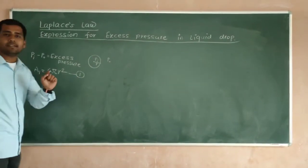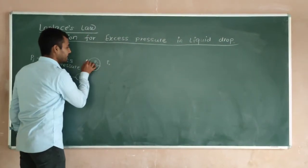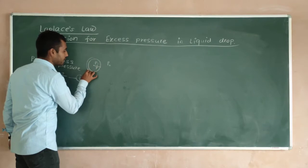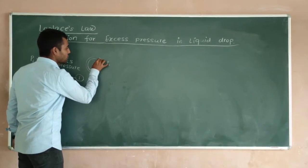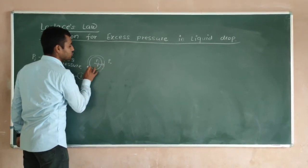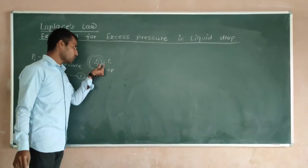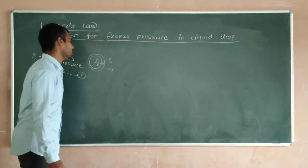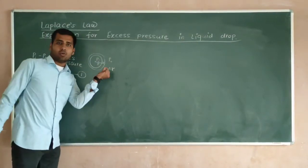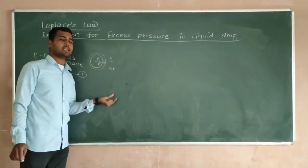Now let's consider the change in area. Here we have a layer of area. We consider a small increase in radius called δR. I am showing here δR — this layer is the thickness due to the inside pressure, and that thickness is δR.